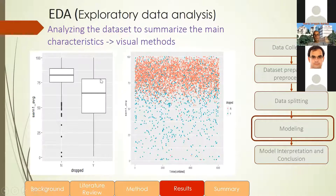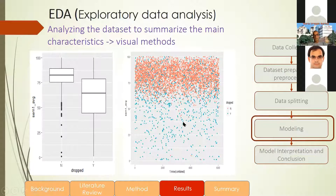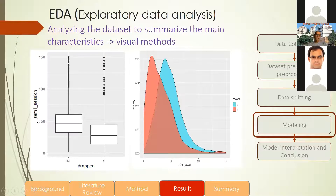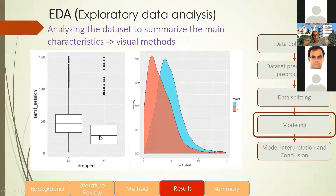Regarding the semester average, we can see that students with the highest semester average had a small likelihood to drop out from school, while students with a low semester average have a high probability to drop out. We also checked how many times students entered the information system during the first semester. Students who used the information system about 50 times or more have a small likelihood to drop out, while students who used it about 25 times per semester have a high likelihood to drop out.